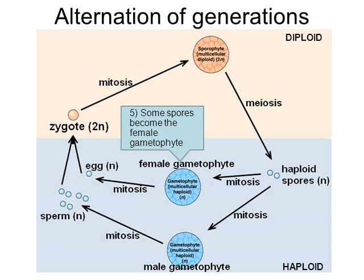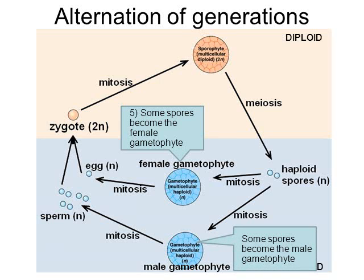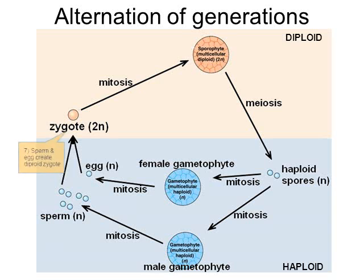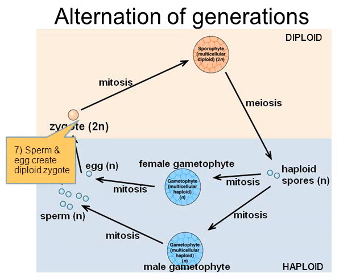Some spores become the female gametophyte. In the word 'gametophyte' you can see the word 'gamete,' so the female gametophyte creates the female gamete — the egg. Other spores grow into the male gametophyte, which creates the male gamete — sperm. As we near the end of this cycle, egg and sperm cells are released by the gametophytes. The female gametophyte creates the egg, the male creates the sperm, and sperm and egg together create a diploid zygote, repeating the process.